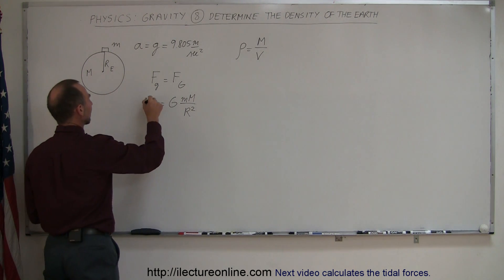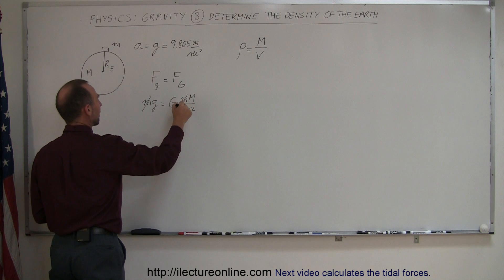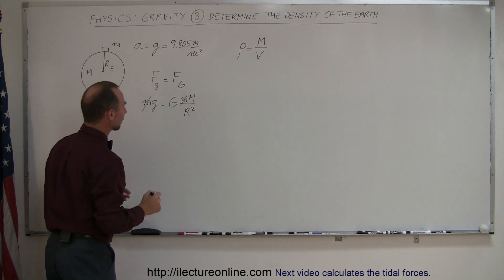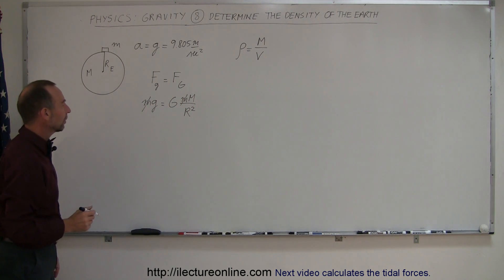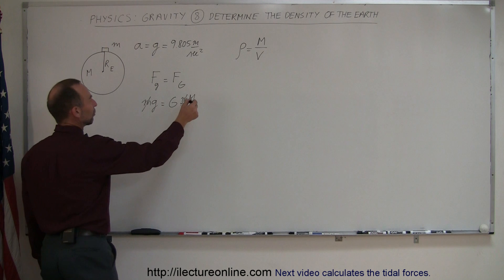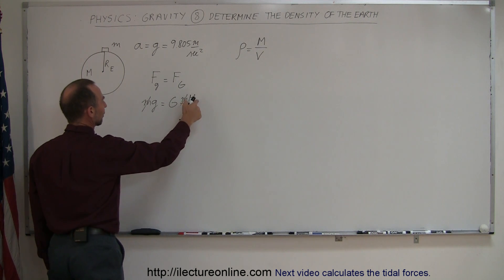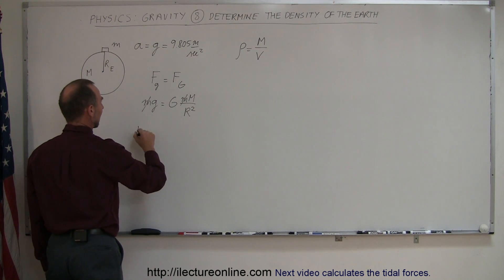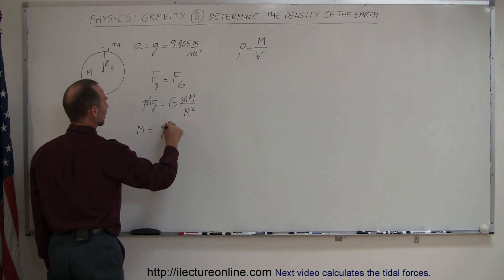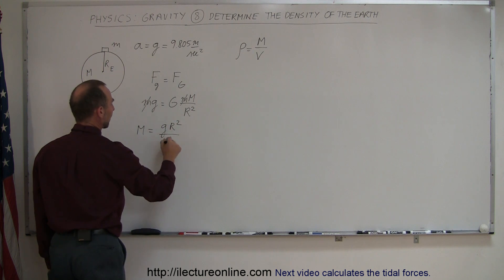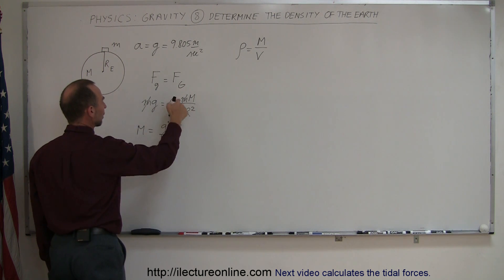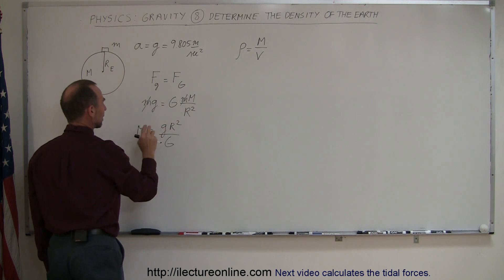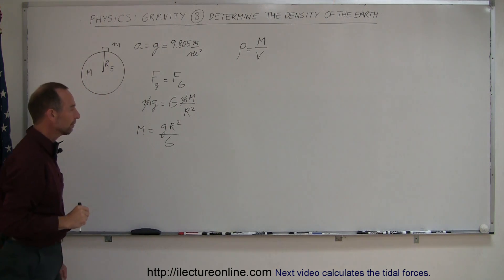Right away, we can see that the masses of the object cancel out, and so now all we have to do is find the mass of the Earth. Solving for M, we get M is equal to g times R squared, divided by big G — moving the R squared over and the big G down, then flipping the equation around.